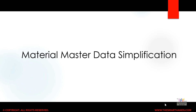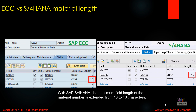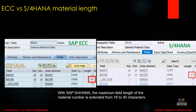Now we will also discuss material master data simplification. As discussed in a previous video, there is a change in the length of the material code that you can create. Earlier in ECC you could only create material codes up to 18 characters in length, but now it has been changed to 40 characters in S4HANA. So we can create material codes with up to 40 characters.